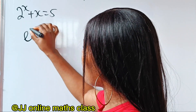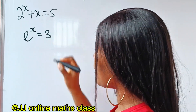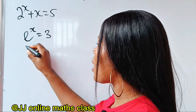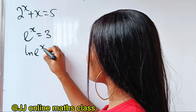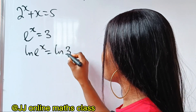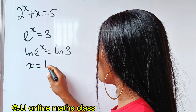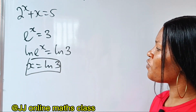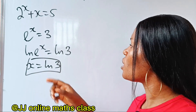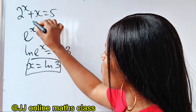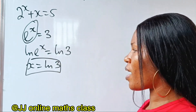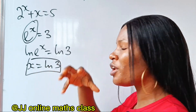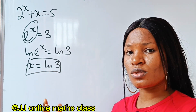If we have e to the power of x is equal to 3, in order to solve for x, we are going to take the natural log of both sides. Then x will come down, and we have that x is equal to ln(3). So that means if you want to use the natural log function, whatever expression you are solving must be in this form before you can plug it into your natural log function to get your solution.